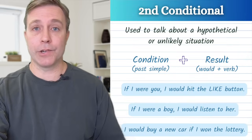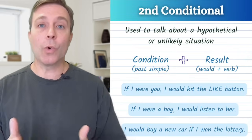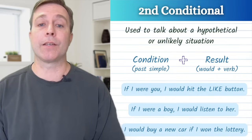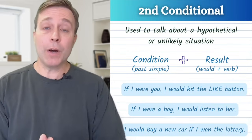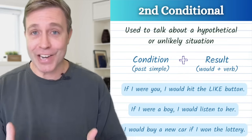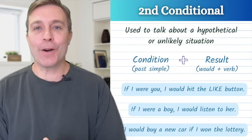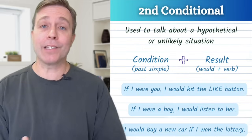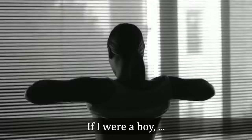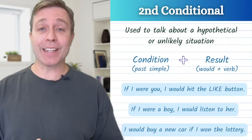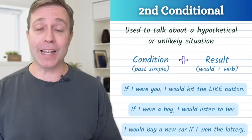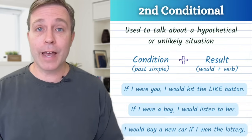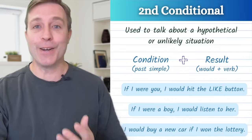With the second conditional, we talk about a hypothetical or unlikely situation. The condition uses the past simple and the result uses would plus the verb. For example: if I were you, I would hit the like button. Or if I were a boy, I would listen to her — you may recognize this from Beyoncé's song. That song is full of second conditional sentences. I could also say: I would buy a new car if I won the lottery.